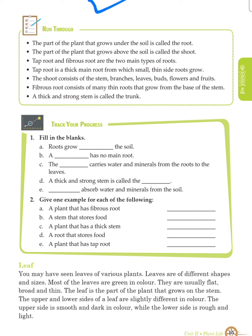The shoot consists of a stem, branches, leaves, buds, flowers and fruits. Fibrous root consists of many thin roots that grow from the base of the stem. A thick and strong stem is called the trunk.